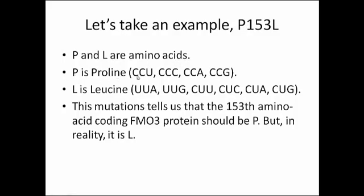P is proline, encoded by the codons CCU, CCC, CCA, or CCG. L is leucine, encoded by its corresponding codons. This mutation tells us that the 153rd amino acid of the FMO3 protein should normally be P (proline), but in reality it is L (leucine). Since FMO3 has 532 amino acids, this position number must not exceed 532. The first letter indicates the normal amino acid and the second indicates the actual mutated amino acid.